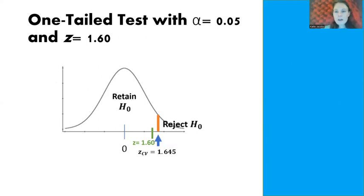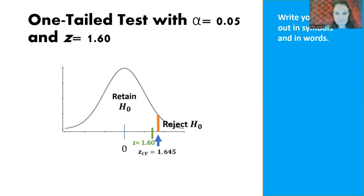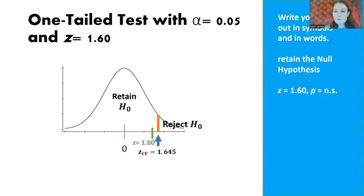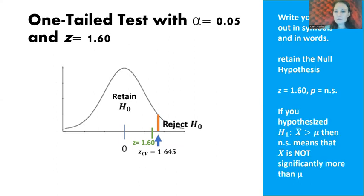For a one-tailed test where alpha equals 0.05 and z equals 1.60: after labeling the normal curve with our critical value of 1.645, we see that 1.60 does not move beyond the critical value, so we retain the null hypothesis. In symbols: Z equals 1.60, p equals n.s. This means the sample mean is not significantly larger than the population mean.